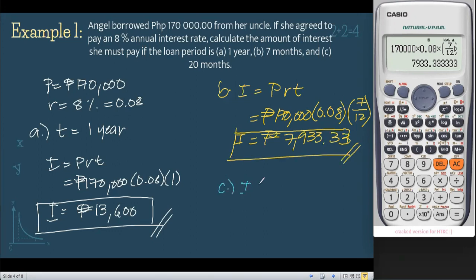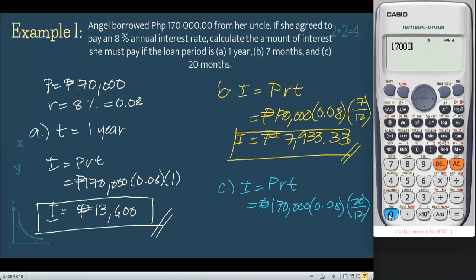Similar case for letter C. Again, I equals PRT. Our principal is $170,000 times our R, 0.08, times the T, 20 over 12. Again, why do we divide by 12? Because our time must always be in terms of years. The given for letter C is in terms of months, so to turn it into years, we divide by 12. Using our calculators, our interest is approximately $22,666.67.